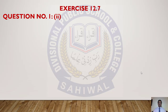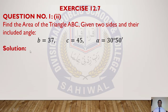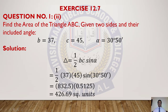Now we do Exercise 12.7, Question 1, Part 2: find the area of triangle ABC given two sides and their included angle. Sides b and c are given, so their included angle is α. b = 37, c = 45, and α = 30°50'. We use the formula: Area = (1/2) bc sin α. Putting b = 37, c = 45, α = 30°50': 37 × 45 / 2 = 832.5, and sin 30°50' = 0.5125. Multiplying these gives Area = 426.69 square units.